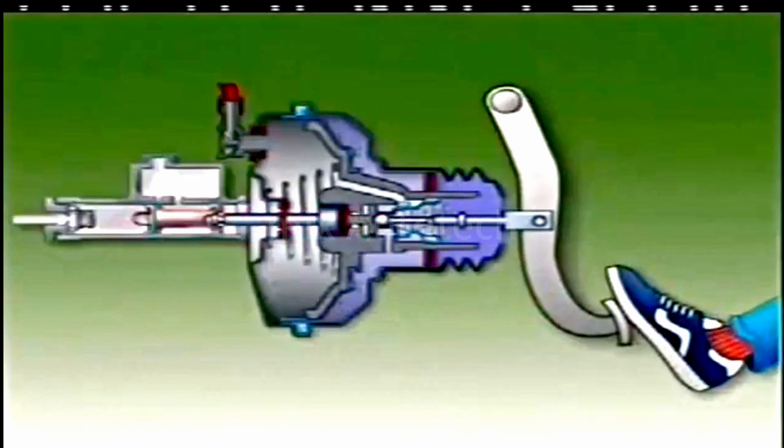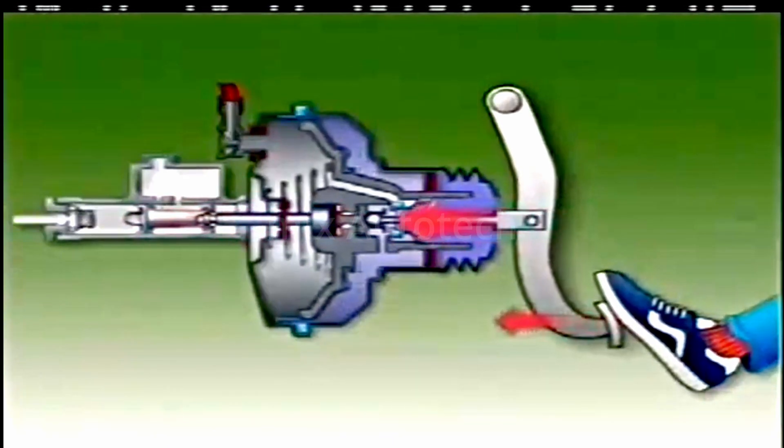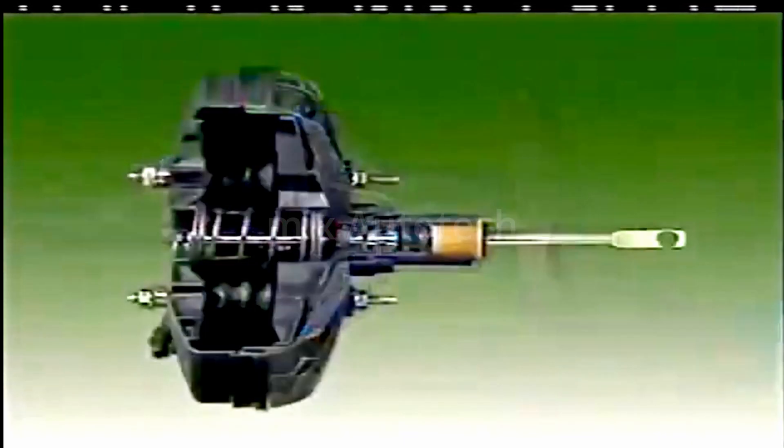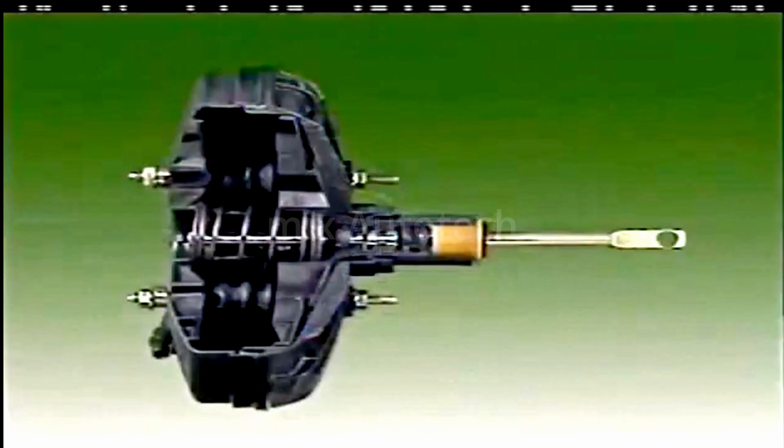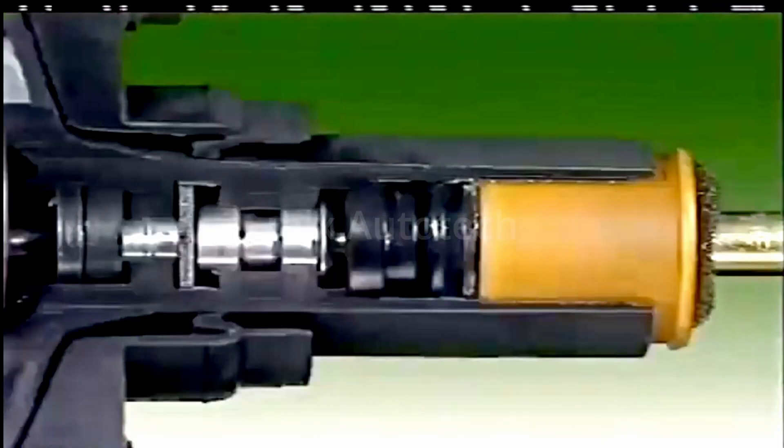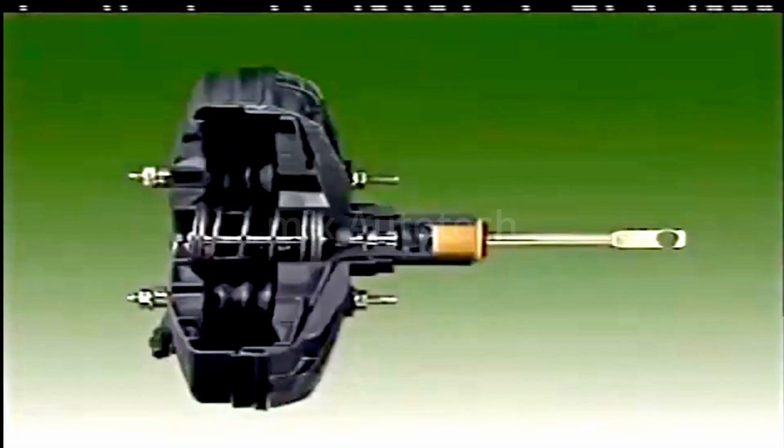When the driver moves the brake pedal pushrod, it transmits movement through the power unit to the master cylinder piston to apply the brakes. It also operates a control valve that admits air at atmospheric pressure to the rear of the unit. How it works depends on the position of the pushrod.